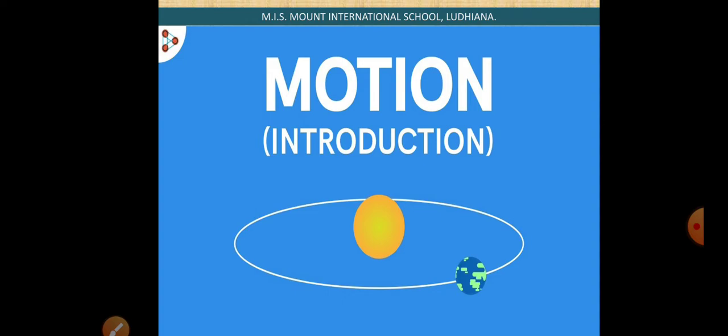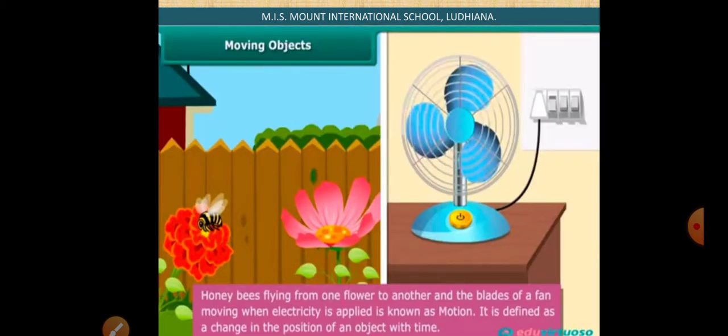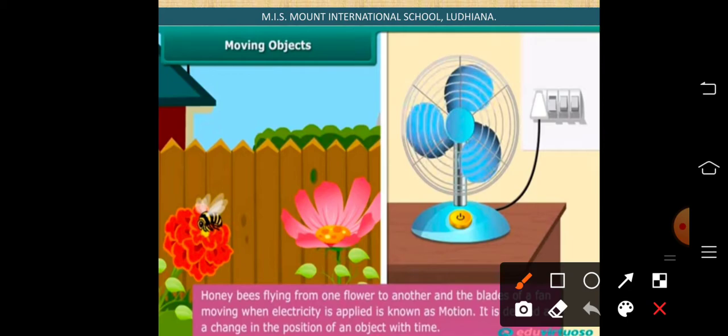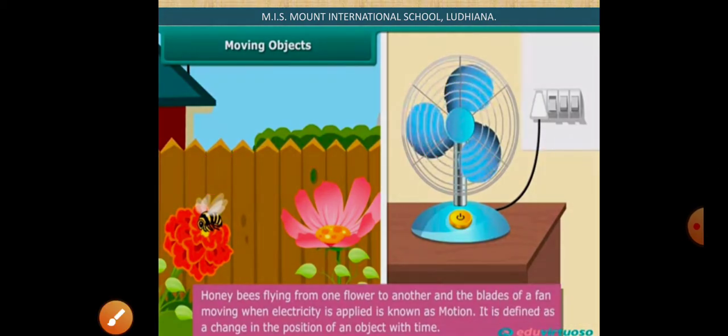The next part of the chapter is motion. To start with the chapter, first you should know what is motion. Look at this picture. The honeybee is moving or flying from one flower to another flower. The blades of the fan are moving when electricity is applied. Both of these are examples of motion. Motion is defined as a change in position of an object with time. Whenever an object changes its position with respect to time or some other object, we say the object is in motion.